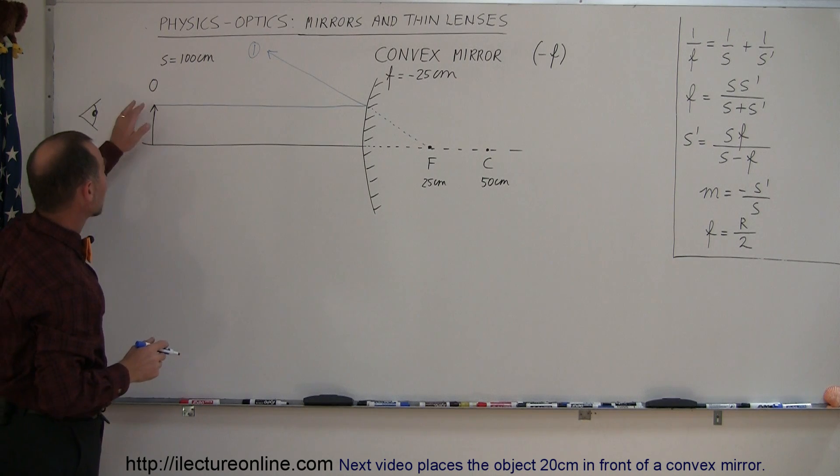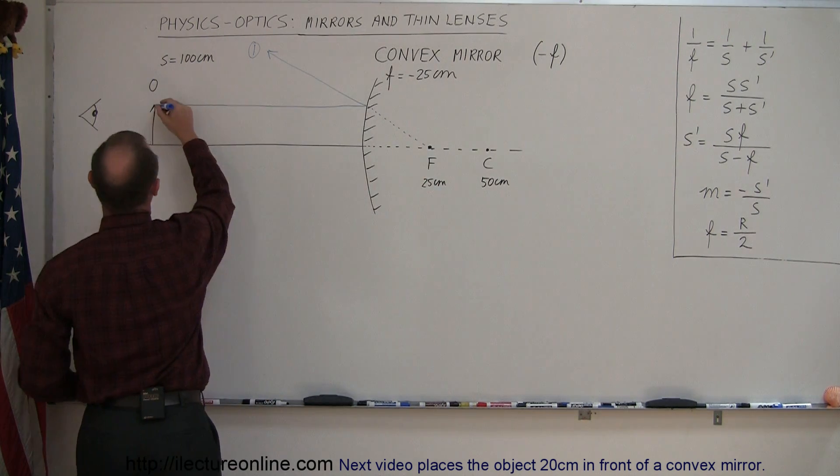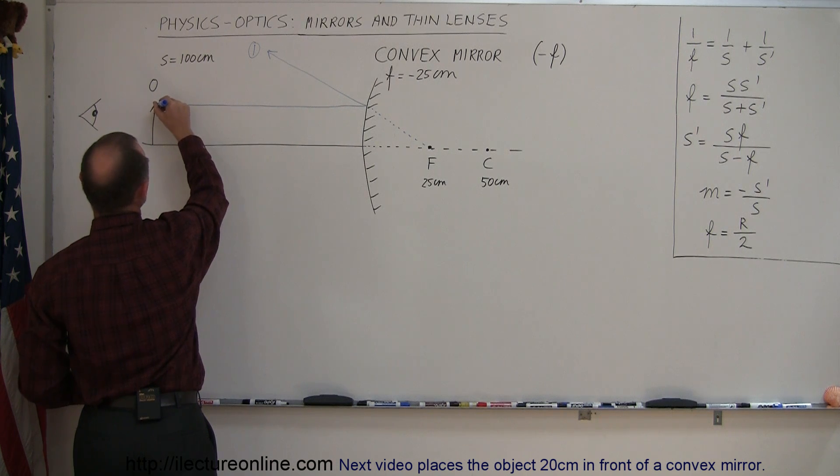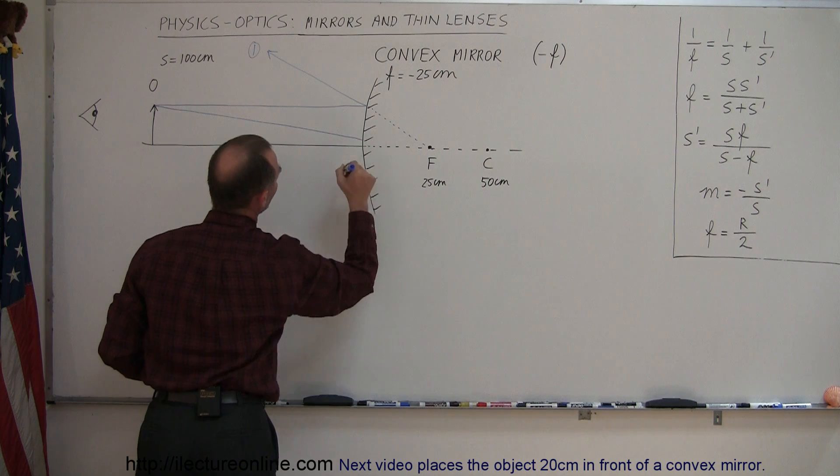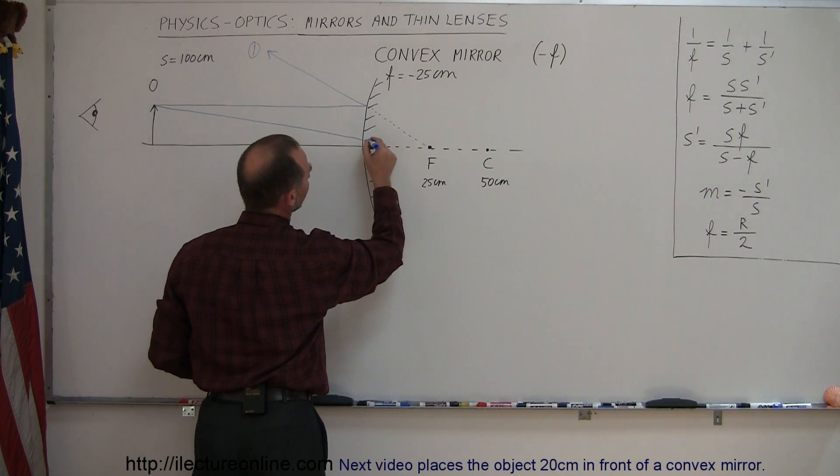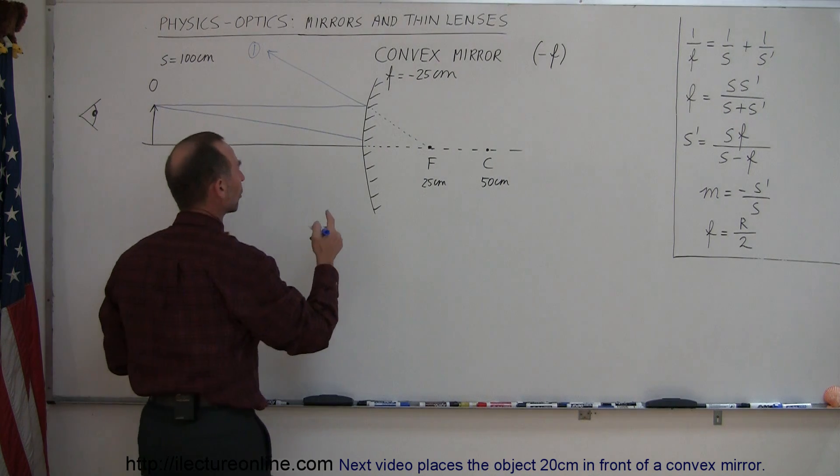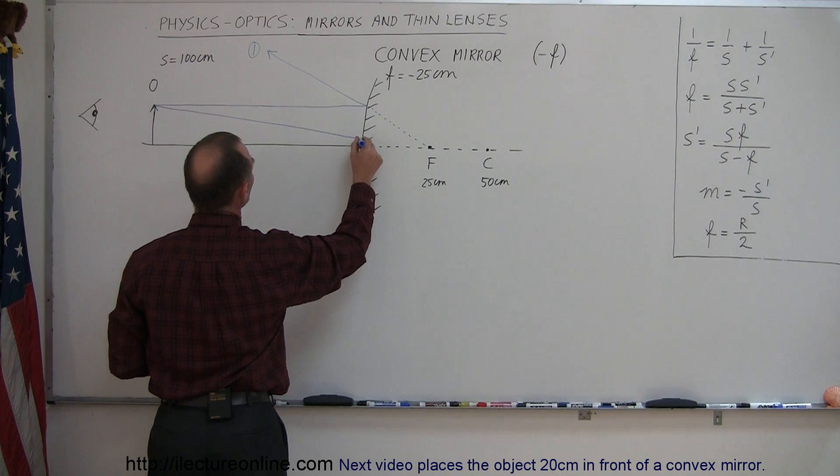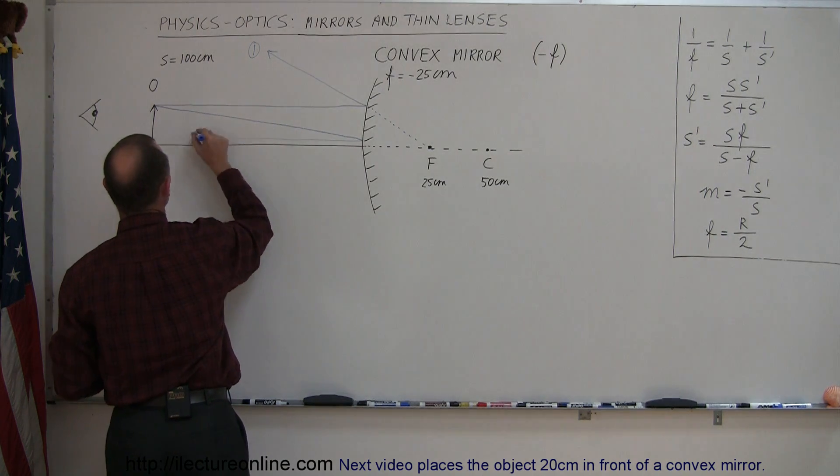The second ray needs to be drawn from the object to the focal point, but the focal point is behind the mirror, so we draw a ray that is directed towards the focal point. But before we get to the focal point, the mirror interrupts, and the ray is then going to reflect back parallel to the normal line. So this is ray number two.